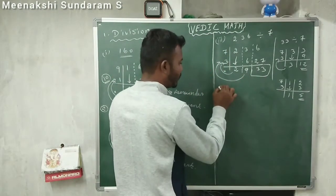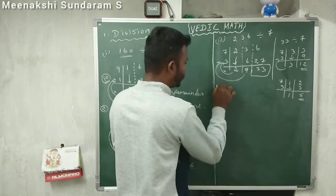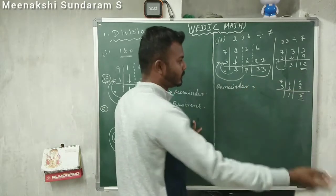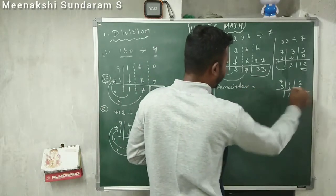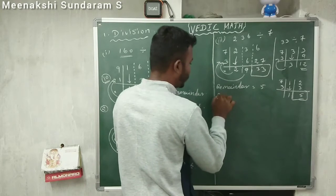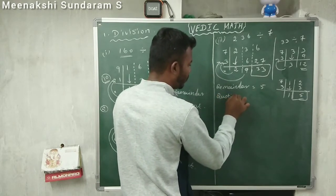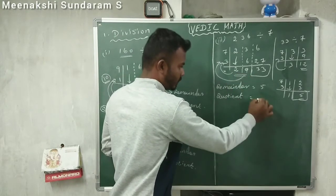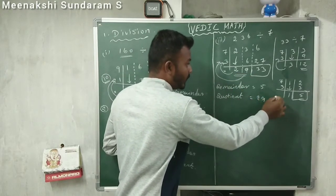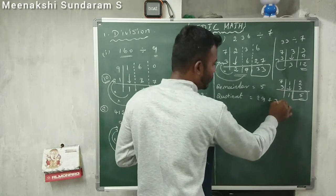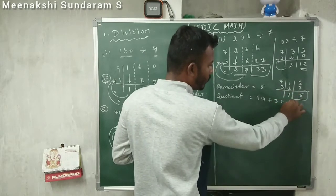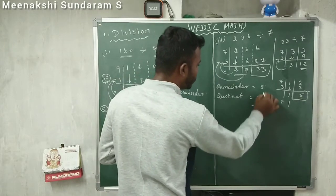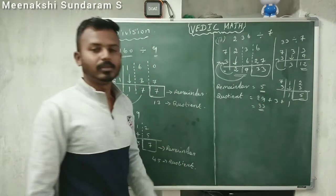Now we can write the quotient. The remainder is the last value — 5. The quotient: from the first step we got 2, then 9 giving 29; next step quotient 3; last step quotient 1. Add them together: 29 plus 3 plus 1 equals 33. So quotient is 33, remainder is 5.